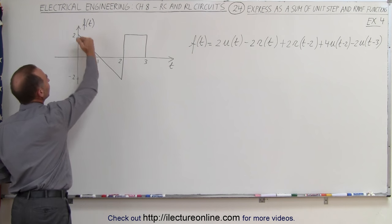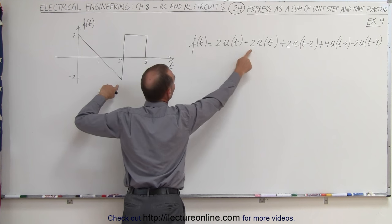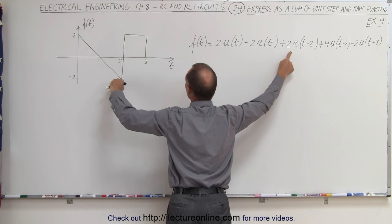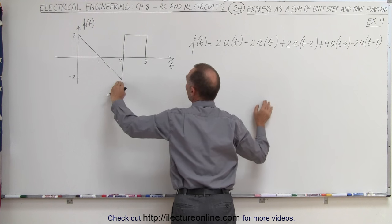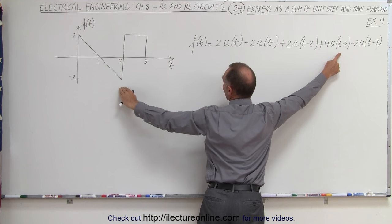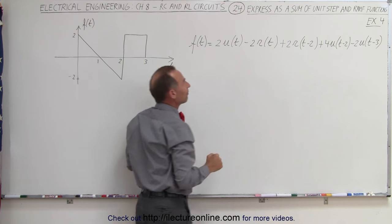Notice we first need to get up to an amplitude of 2. Then we have the negative ramp function. The slope is 2 to 1. Then we need to negate the negative ramp so we need a positive slope of 2 but offset by 2 seconds. Now we need to have a jump of 4 in the amplitude offset by 2 seconds, and then we need to have a drop of 2 with this last unit step function.